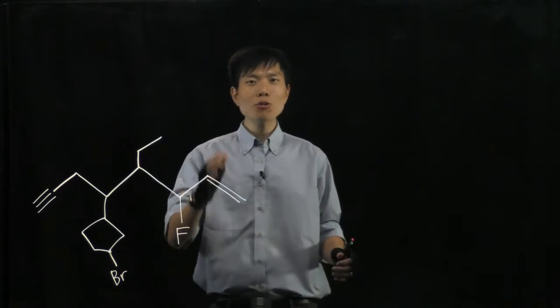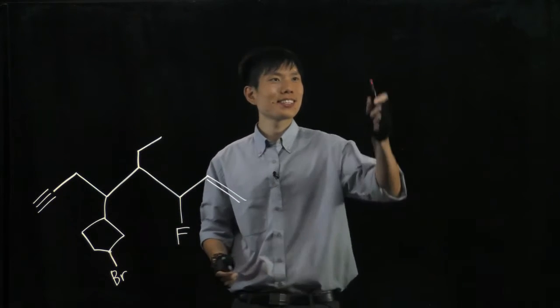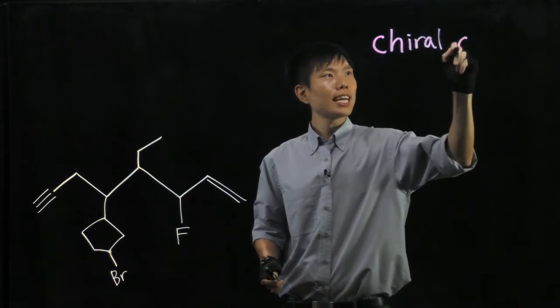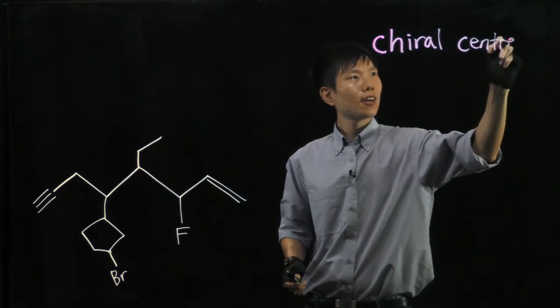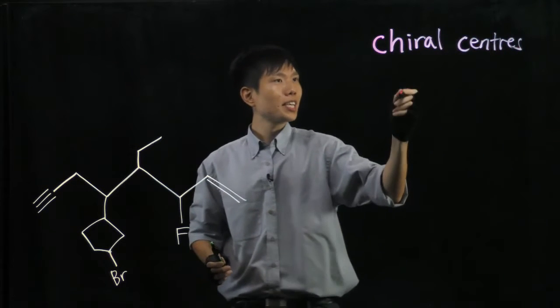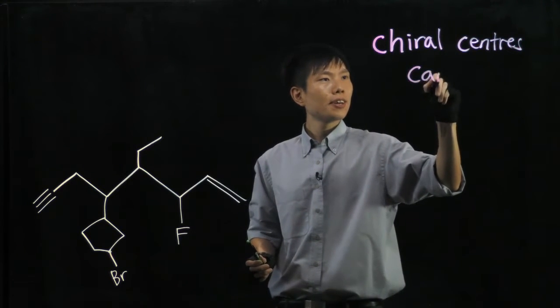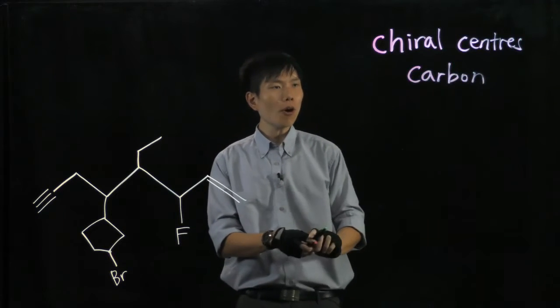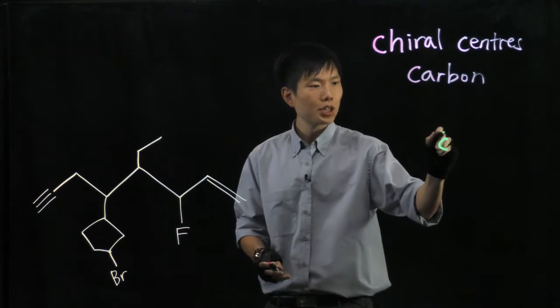So over here I'll be teaching you how to identify chiral centers. Chiral centers, or more specifically we can say chiral carbons. A chiral carbon must have four different branches emerging out of itself.